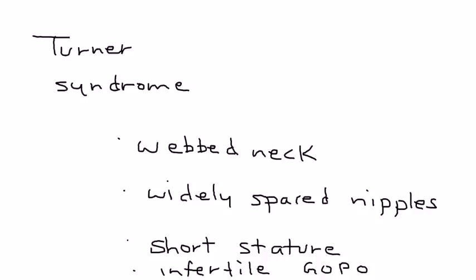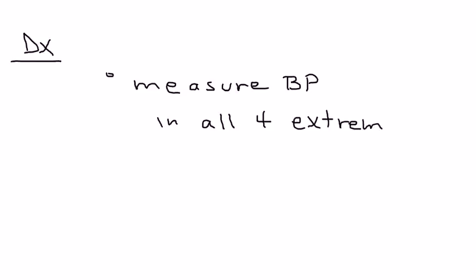Let's talk a little bit about the diagnosis. Really the first thing of course is measuring the blood pressure, measure the blood pressure in all four extremities, and you will essentially see that the blood pressure is high in the upper extremities compared to the lower extremities.